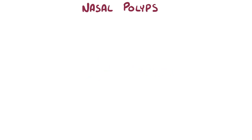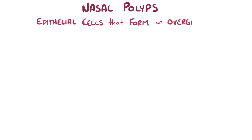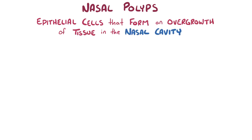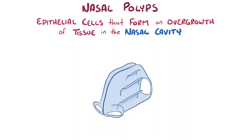A nasal polyp is a clump of epithelial cells that forms a small bump or overgrowth of tissue along the lining of the nasal cavity, which is the inside of the nose.